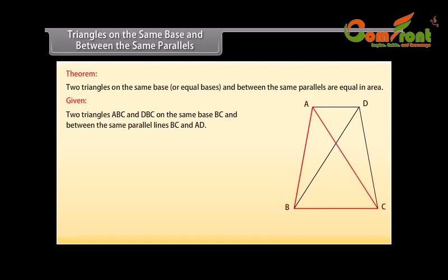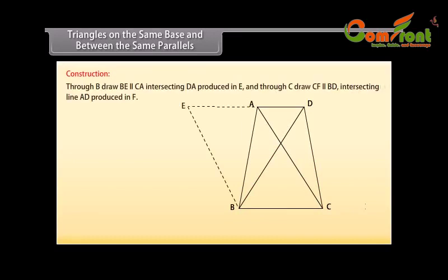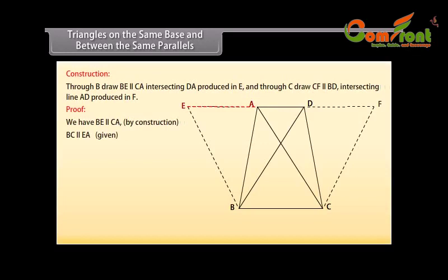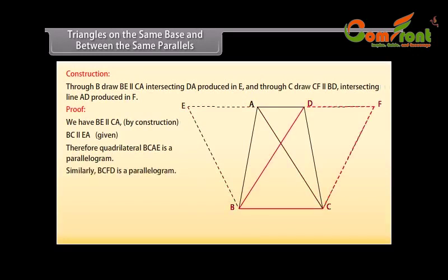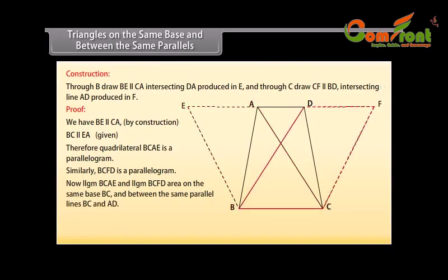Theorem: Two triangles ABC and DBC on the same base BC and between the same parallel lines BC and AD are given equal in area. To prove: area of triangle ABC is equal to area of triangle DBC. Construction: Through B draw BE parallel to CA intersecting DA produced in E, and through C draw CF parallel to BD intersecting line AD produced in F. We have BE parallel to CA by construction and BC parallel to EA, which is given. Therefore, quadrilateral BCAE is a parallelogram. Similarly, BCFD is a parallelogram. Now, parallelogram BCAE and parallelogram BCFD are on the same base BC and between the same parallel lines BC and AD. Therefore, area of parallelogram BCAE is equal to area of parallelogram BCFD. Mark it as one.